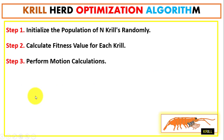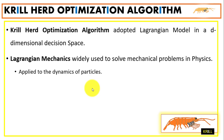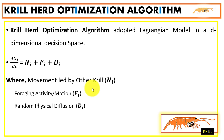In step 3, we perform motion calculation using the Lagrangian model. This model is widely used to solve mechanical problems in physics and is applied to the dynamics of particles. In this algorithm, we use this model to compute the motion or movement of the krills.